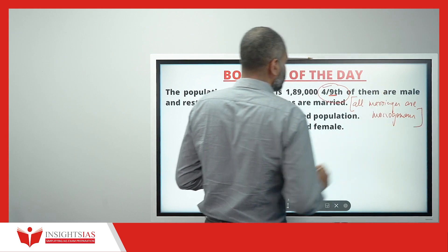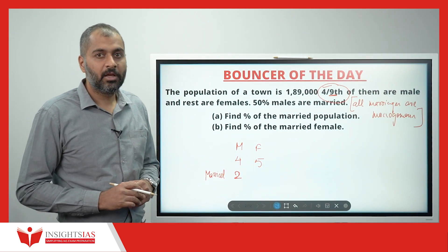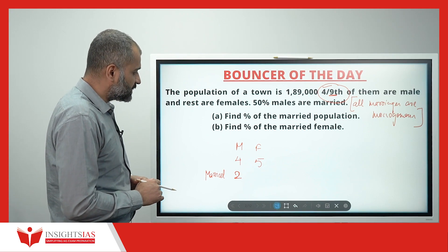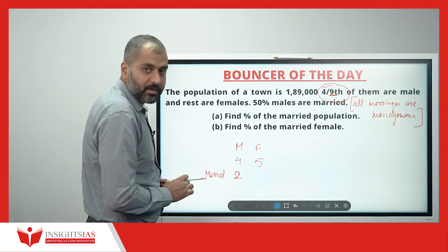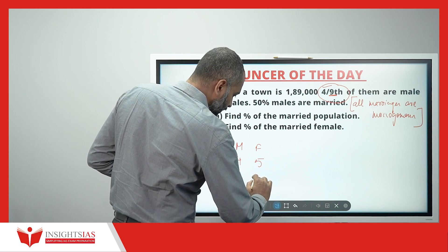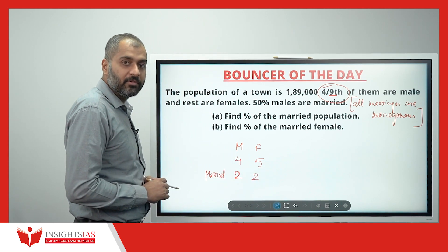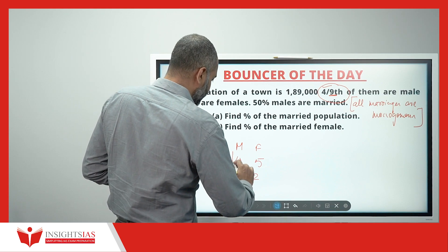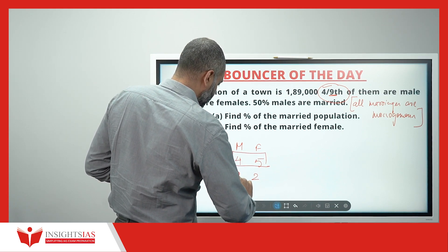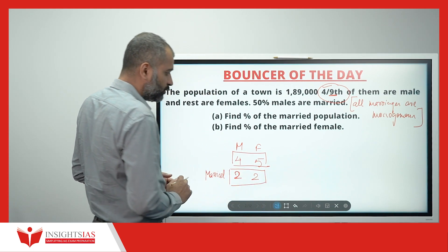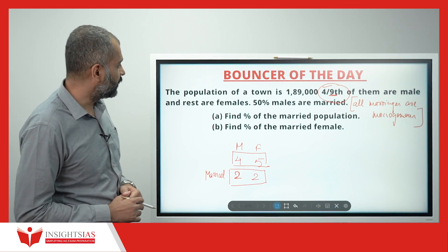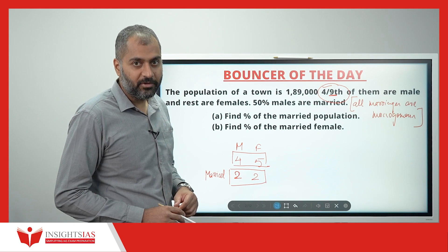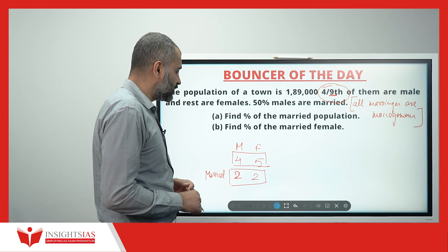All marriages are monogamous — meaning 1 spouse, 1 husband and 1 wife. So if 2 men are married, then definitely 2 women are also married. Out of these 9 people, married are 2 men and 2 women — 4 people total.